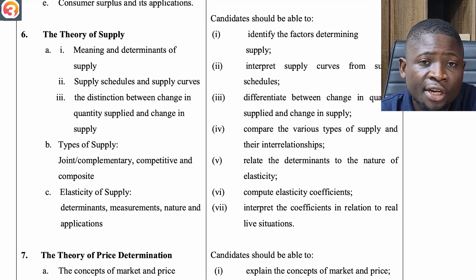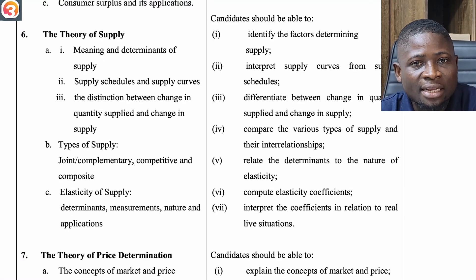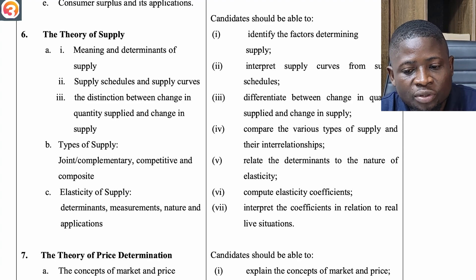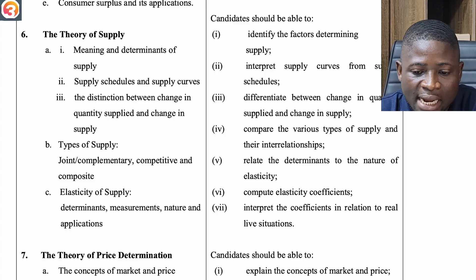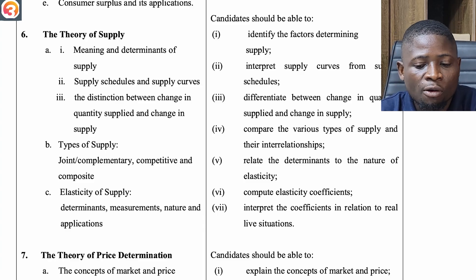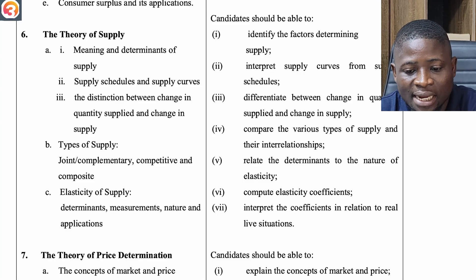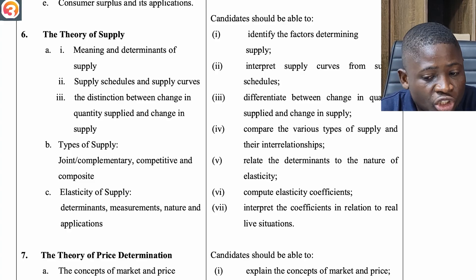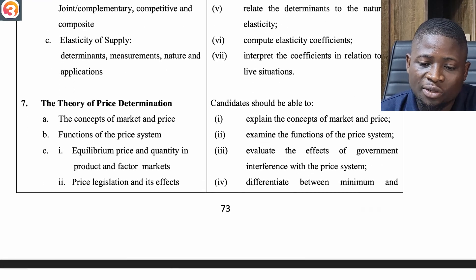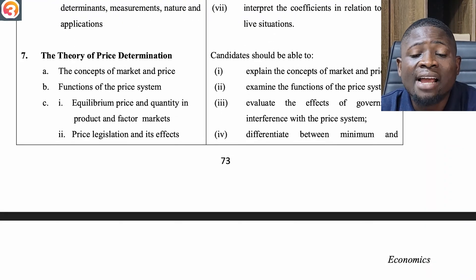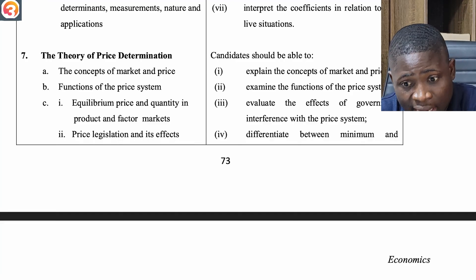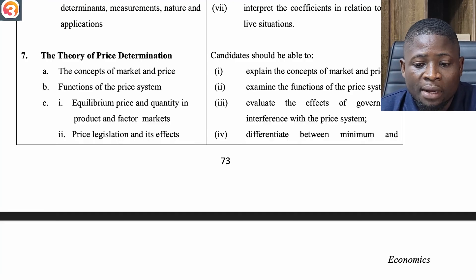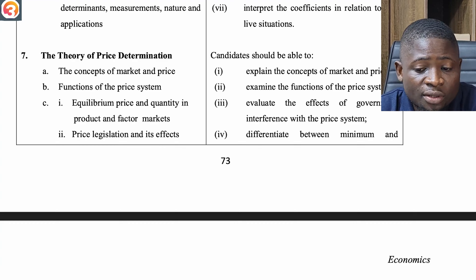The sixth topic is the Theory of Supply — meaning and determinants of supply, supply schedules and curves, the distinction between change in quantity supplied and change in supply, types of supply: joint or complementary, competitive and composite, and the elasticity of supply — determinants, measurements, nature and applications. The seventh topic is the Theory of Price Determination — concepts of market and price, functions of the price system, equilibrium price and quantity in product and factor markets.